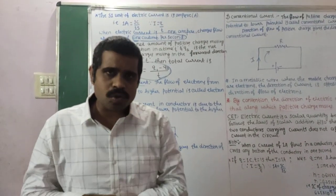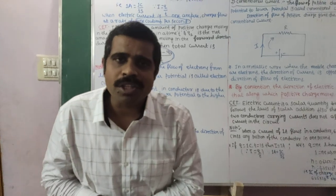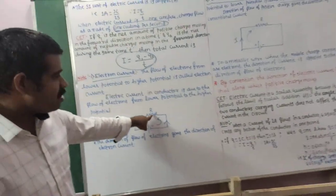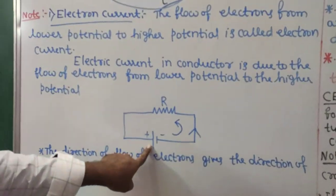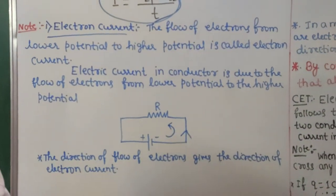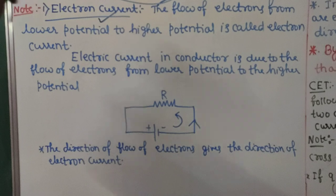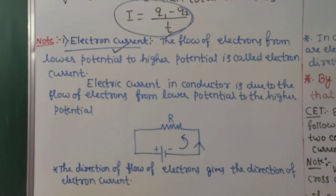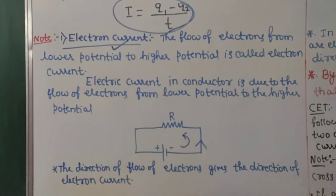What is electron current? Electron current is the flow of electrons from lower potential to higher potential. In a conductor with resistance R connected to a battery, electrons flow from negative to positive terminal, that is from lower potential to higher potential. This constitutes electron current. This is actually the real current.